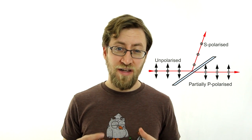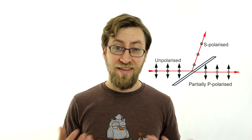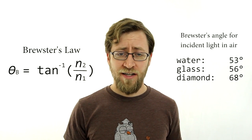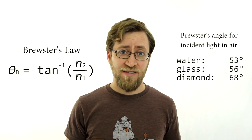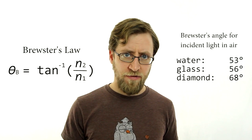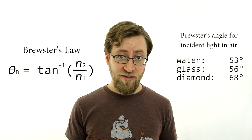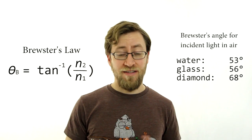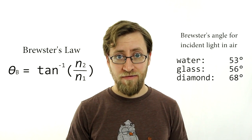The light that gets refracted through the surface is also slightly polarized in the opposite direction. So what is Brewster's angle? We can find it using Brewster's law. It's the arc tangent of the second refractive index over the first refractive index. Does this ratio look familiar? Yep, it's the same one from Snell's law.